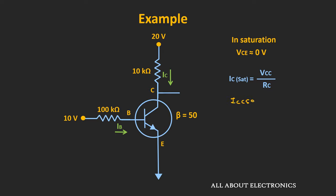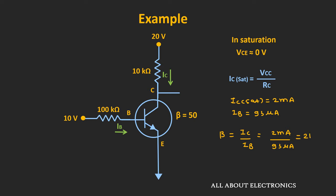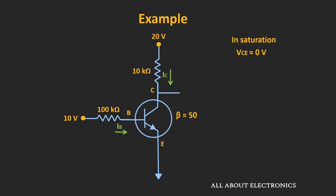Here, the saturation current Ic(sat) is equal to 2mA, while the value of the base current Ib is equal to 93μA. So we can say that the current gain β in the saturation is equal to Ic divided by Ib, that is equal to 2mA divided by 93μA. If we calculate it, then the value of β in the saturation is equal to 21.5. And in fact, it is less than the value of β in the active region. That means when the BJT operates in the saturation region, the value of the current gain will reduce — the value of β in saturation will be less than the value of β in the active region.